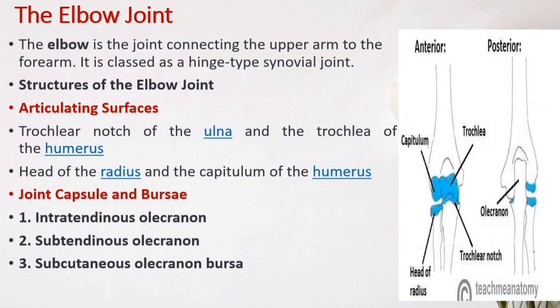The elbow is the joint connecting the upper arm to the forearm. It is classed as a hinge-type synovial joint. The elbow joint consists of two articulations: the trochlear notch of the ulna with the trochlea of the humerus, and the head of the radius with the capitulum of the humerus. The joint capsule is strong and fibrous. There are several bursae: the intratendinous olecranon bursa within the triceps brachii tendon; the subtendinous olecranon bursa between the olecranon and triceps tendon, reducing friction during flexion and extension; and the subcutaneous olecranon bursa between the olecranon and overlying connective tissue, implicated in olecranon bursitis.